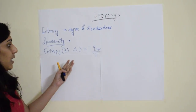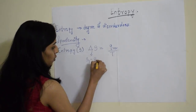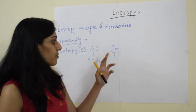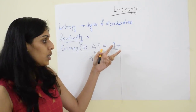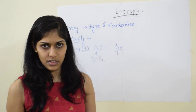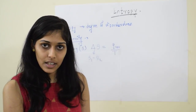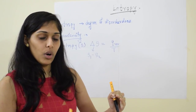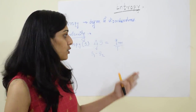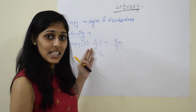Delta S represents a change in entropy, which is S_final minus S_initial. Q reversible refers to the heat transferred by a reversible process, which is the usual way of transferring heat in thermodynamics. As more heat is given into the system, the change in entropy will be more, because more heat means the molecules have more space to become disordered. So if more heat is supplied, the entropy change will be greater.